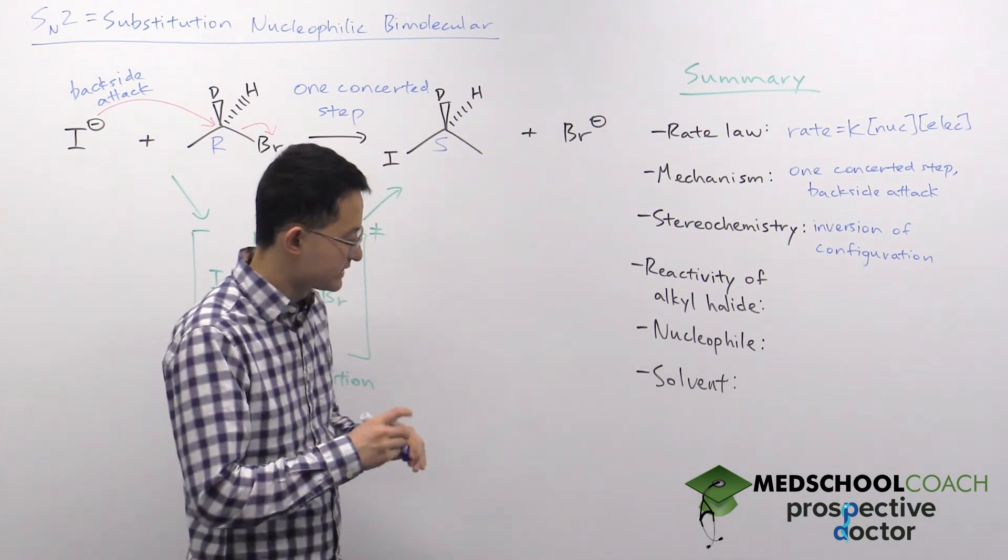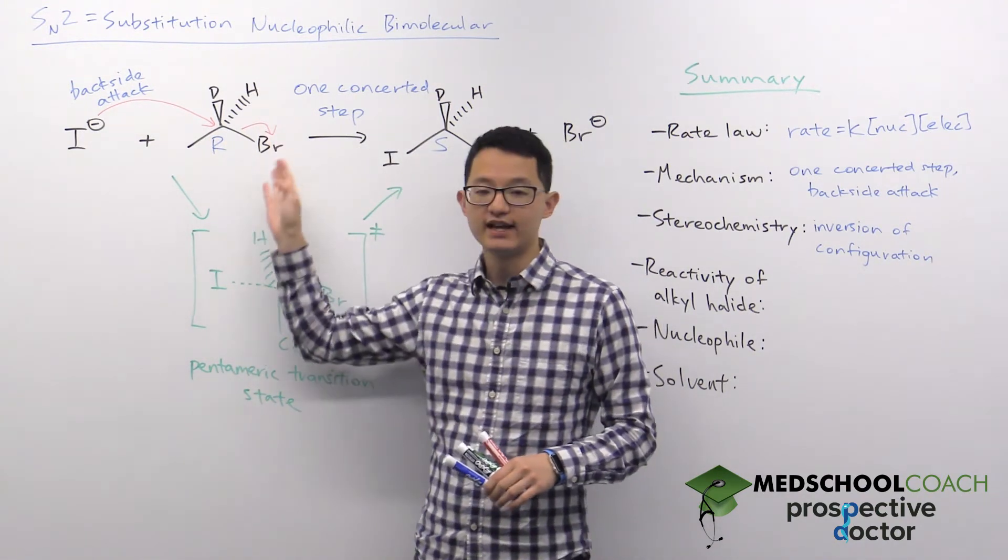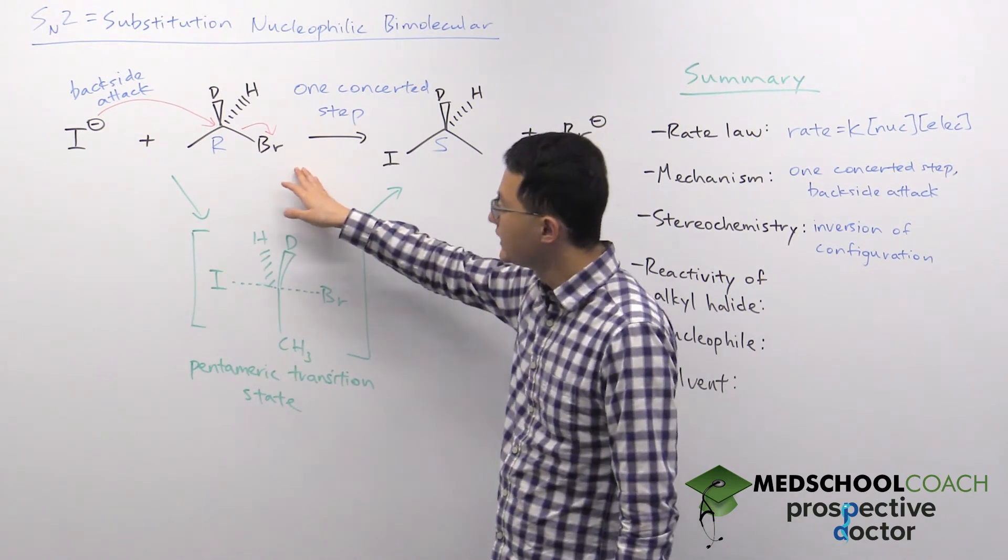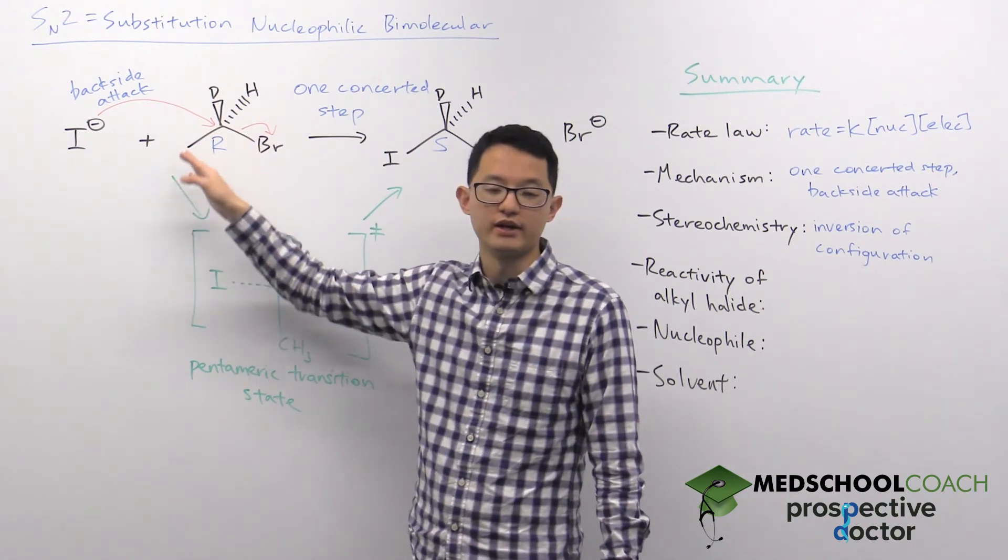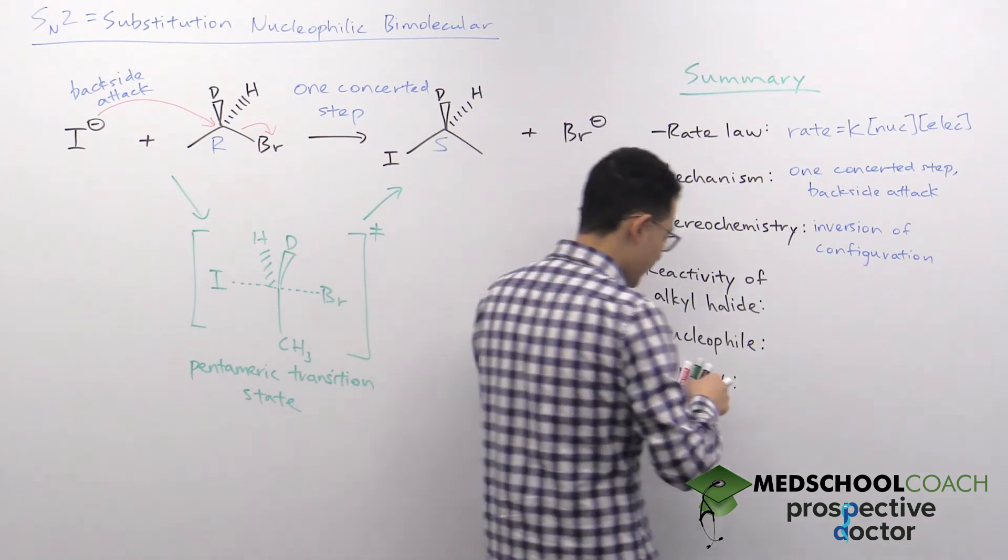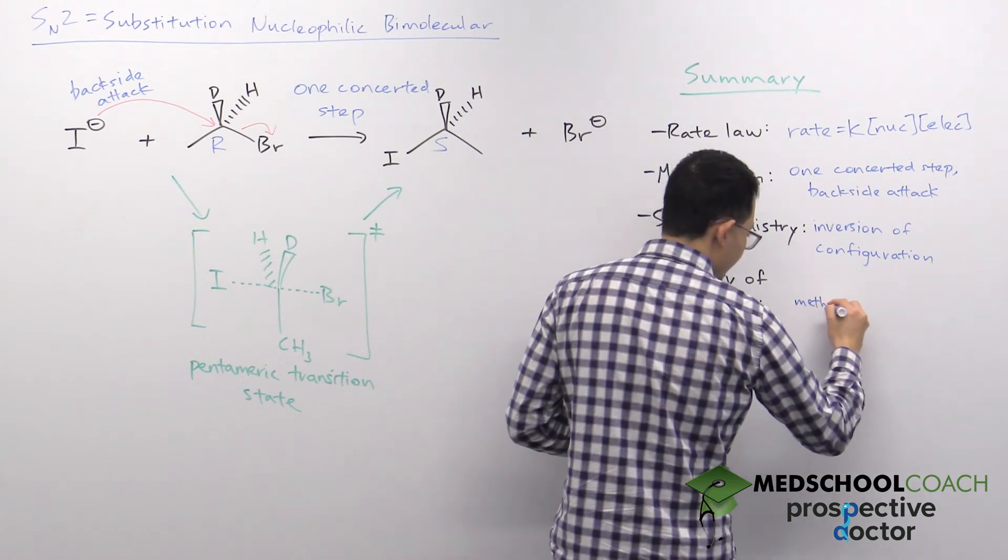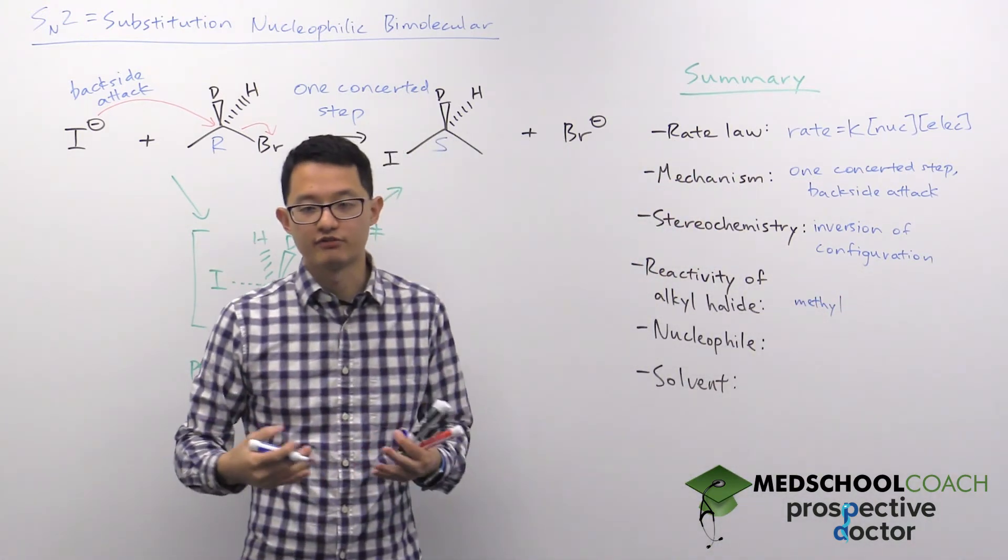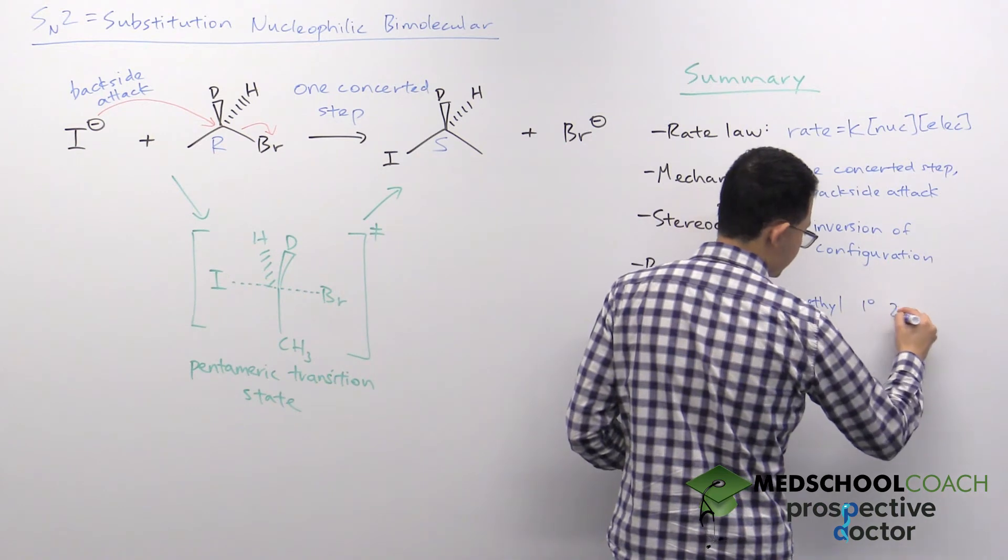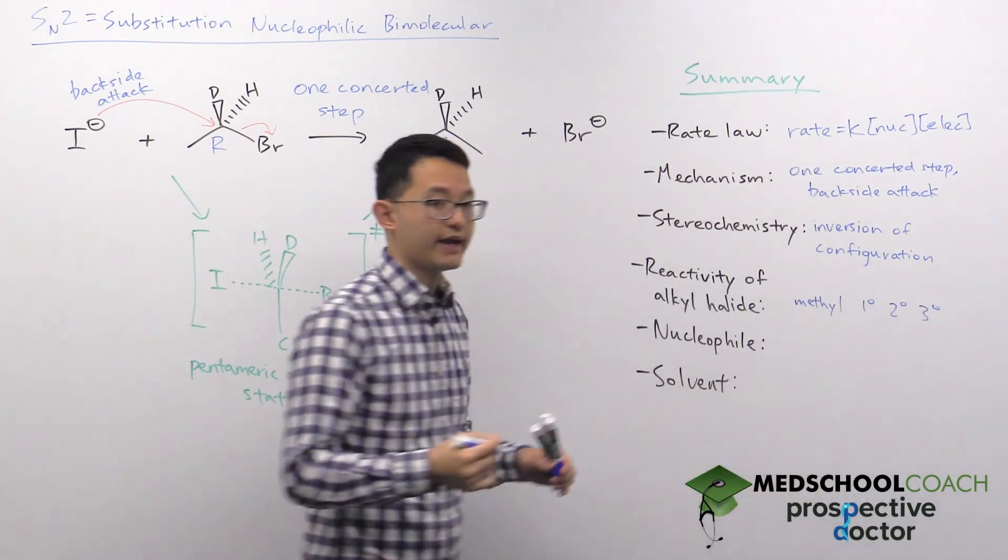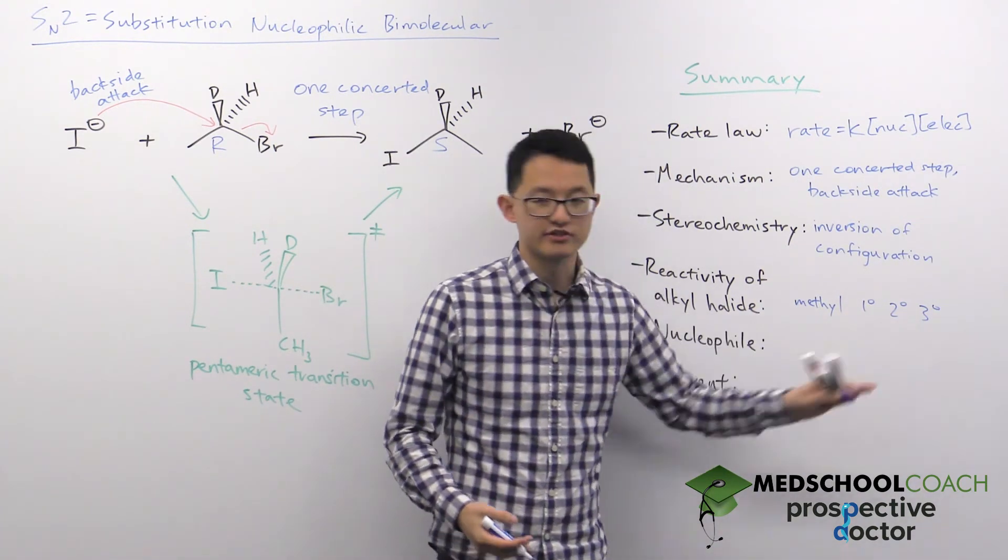For reactivity of alkyl halides, this is actually something we haven't addressed yet. But this is considering the alkyl halide, the electrophile, that here the bromine is attached to a carbon that is a primary carbon. It's a primary carbon because it's only attached to one other carbon. But you can consider other types of alkyl halides. For instance, you could have a methyl alkyl halide where the halogen is attached to a carbon that is not connected to any other carbons. You can also consider a primary, secondary, and tertiary alkyl halides.